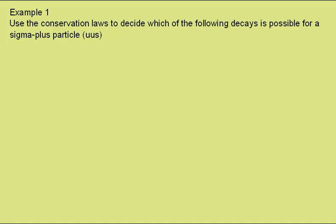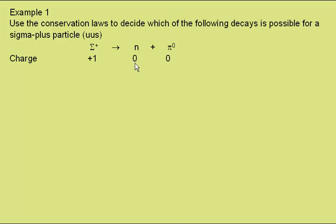The first decay we're given is for the sigma plus to become a neutron plus a pi zero. In terms of charge, the sigma plus has a charge of plus one, hence the plus sign. The neutron has zero charge and the pi nought has zero charge. So straight away, in terms of charge conservation, this interaction is not possible.